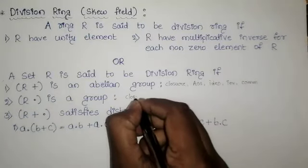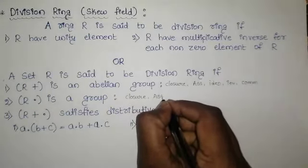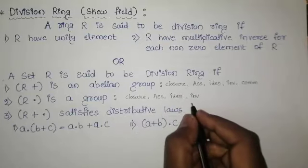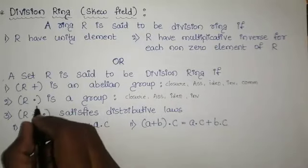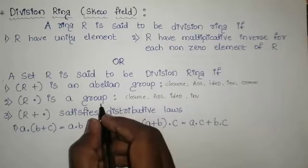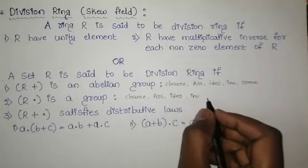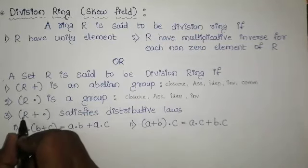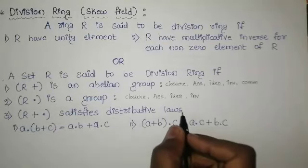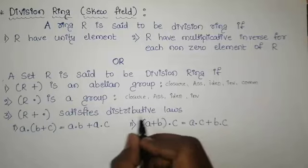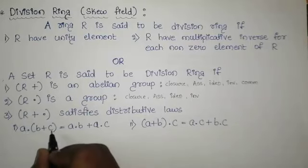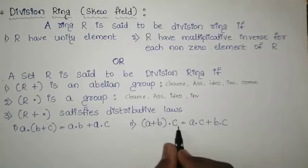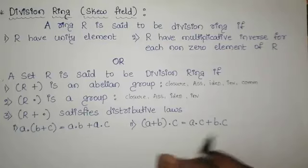Next, R· is a group. Here we have to satisfy closure law, associative law, identity law, and inverse law — four conditions under multiplication. If it satisfies all four conditions, then it is a group. And the third condition is R+· satisfies distributive laws: a·(b + c) = a·b + a·c, and (a + b)·c = a·c + b·c.